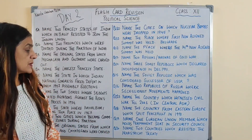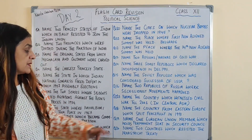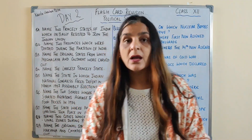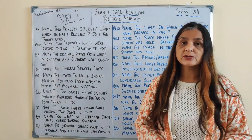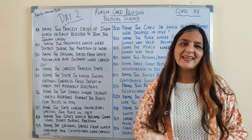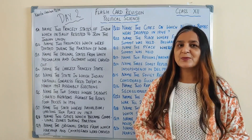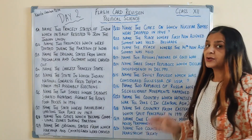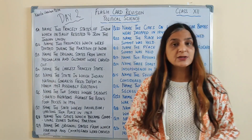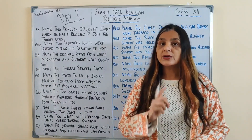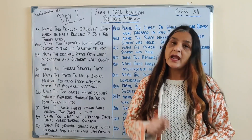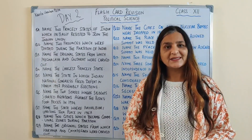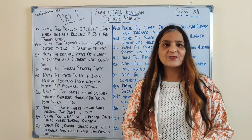Last question: name two countries which resisted the Maastricht Treaty, and the answer is Denmark and Sweden. I hope you enjoyed the class, children. If you are new to my channel then do subscribe. If you do all these questions, you are going to get good marks in your board examination. Also leave a comment in the comment section and like the video. Thank you so much, thanks for watching.